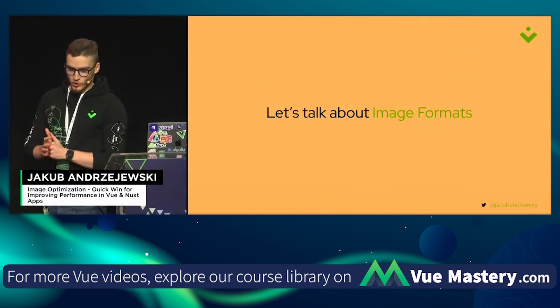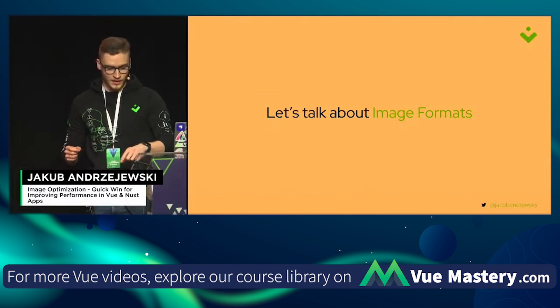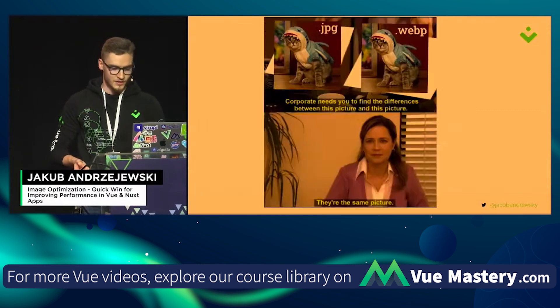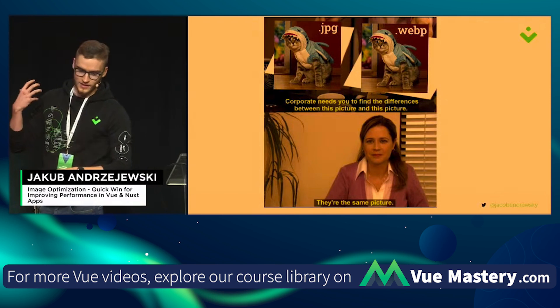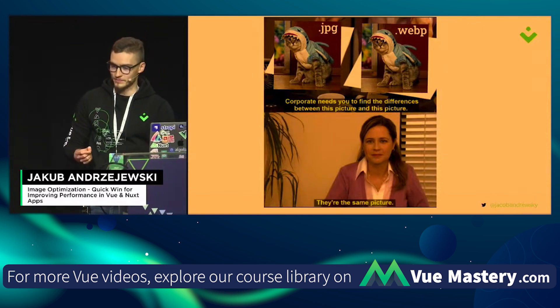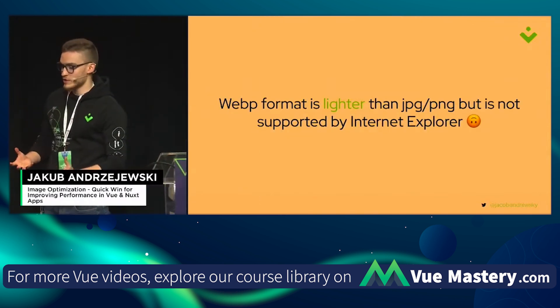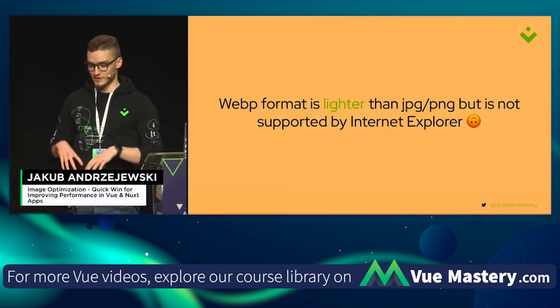Let's talk first about image formats. There are many technical differences between one image format and another. In today's talk I want to focus on optimization — basically the size and load time of the image. For users, the usual difference between an image in one format versus another is typically invisible — they just look the same. The only real difference is the size. Formats such as WebP or AVIF are lighter than JPEG and PNG, but they are not supported by Internet Explorer.